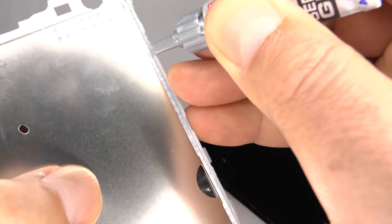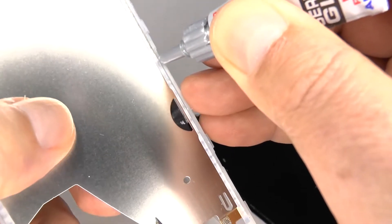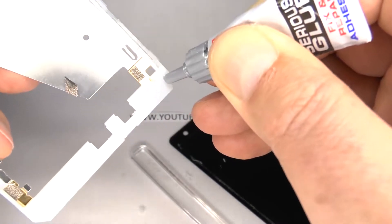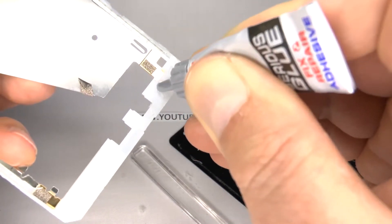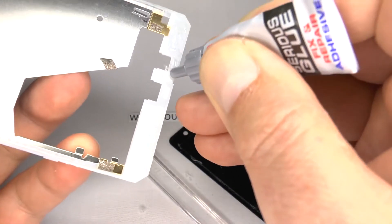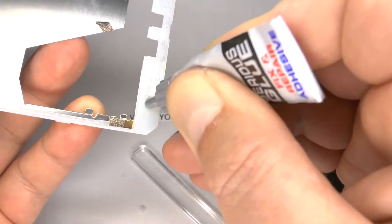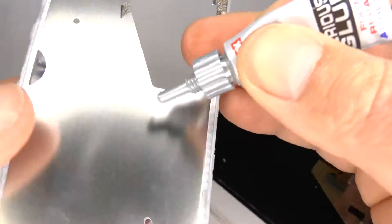Try not to use super glue as it's very brittle and it's likely the screen will fall out if the phone is dropped. Don't put too much on, just a very thin film is all that's needed.